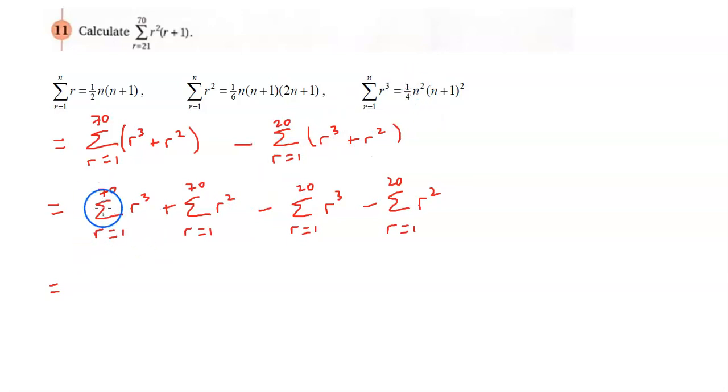So that is going to be for this first one here, 1 quarter times 70 squared times 71 squared. That's this sum here where n equals 70 plus this one here where n equals 70 again. So 1 sixth times 70 times 71 times 141.